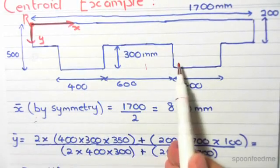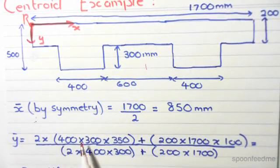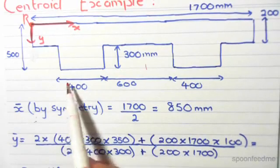Y-bar is equal to two times... The reason I did two is because we have two lots of these legs. Two times 400 times 300. 400 times 300 is the area of each leg.